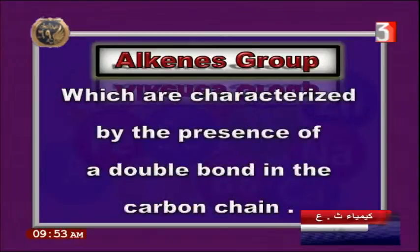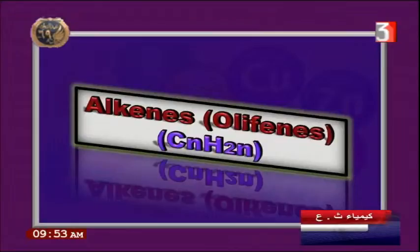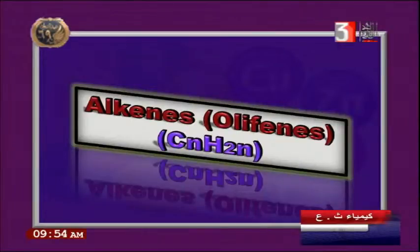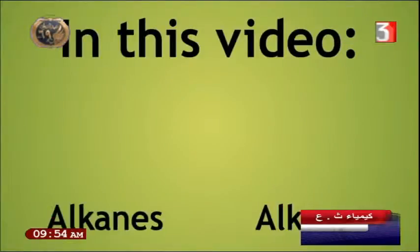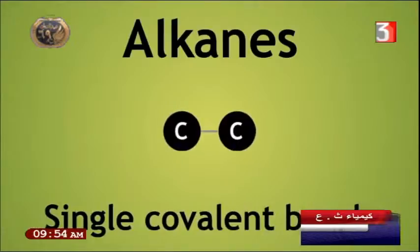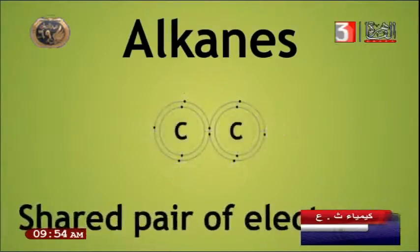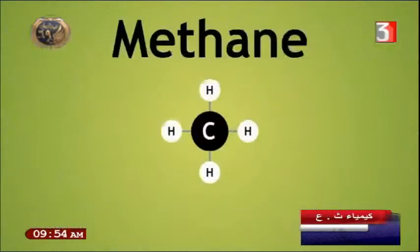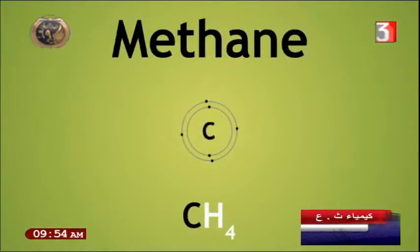Cracking produces unsaturated open-chain aliphatic hydrocarbons. This brings us to alkenes — characterized by the presence of a double bond in the carbon chain. Alkenes are also called olefins, with the general formula CnH2n. Unlike alkanes (CnH2n+2) with single covalent bonds, alkenes have double bonds. Ethane is an example of a saturated alkane with single bonds, while alkenes have double bonds with four shared electrons.